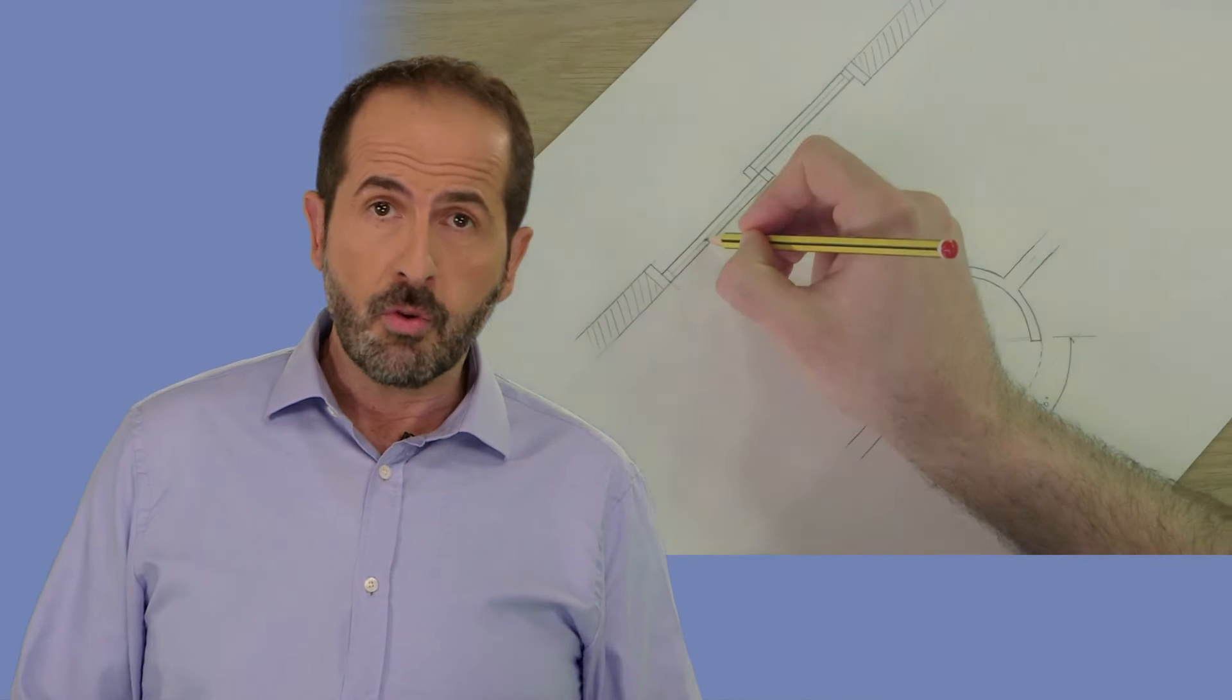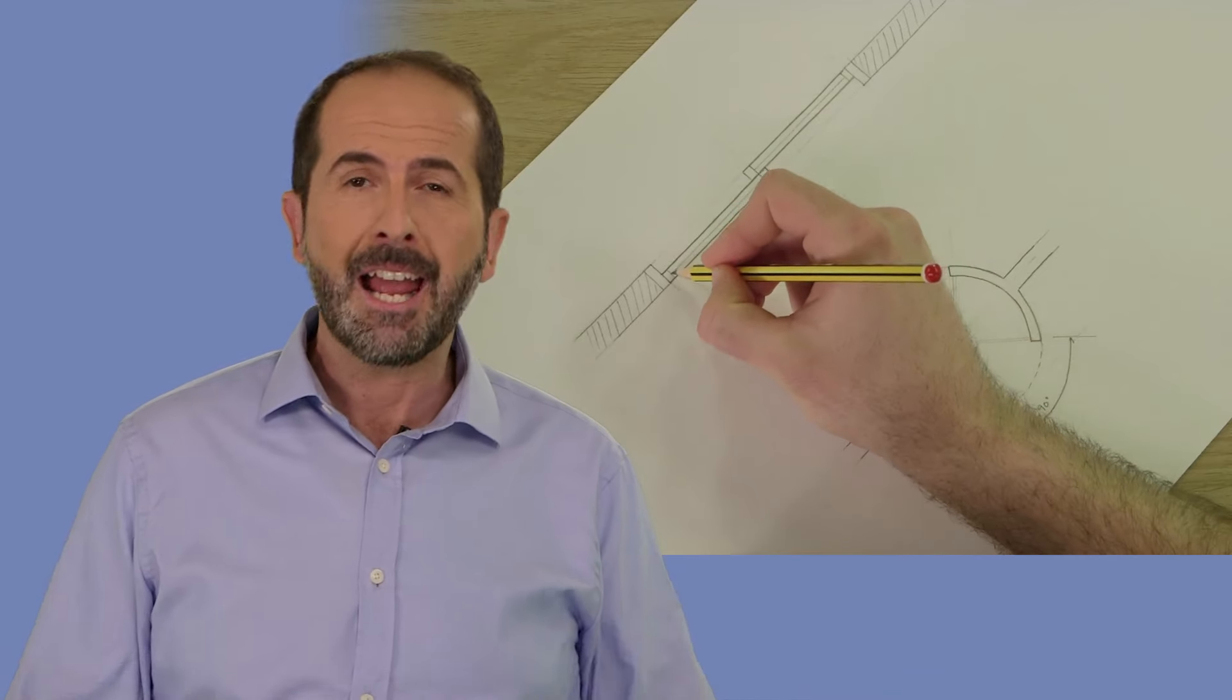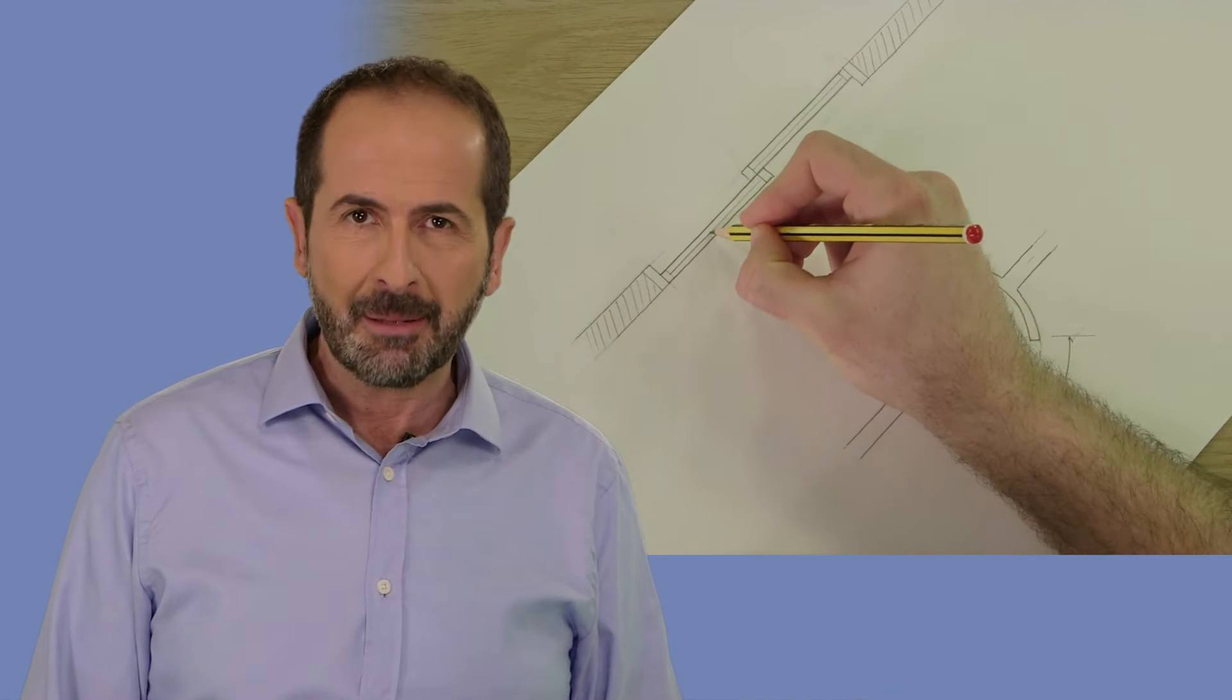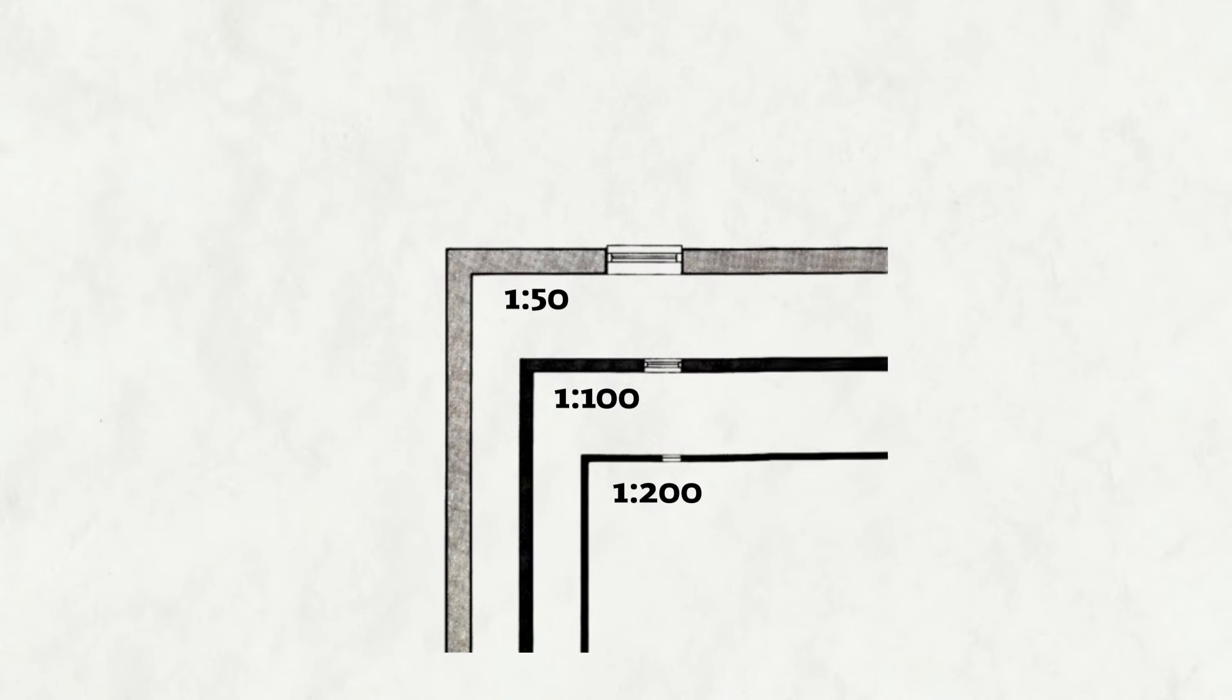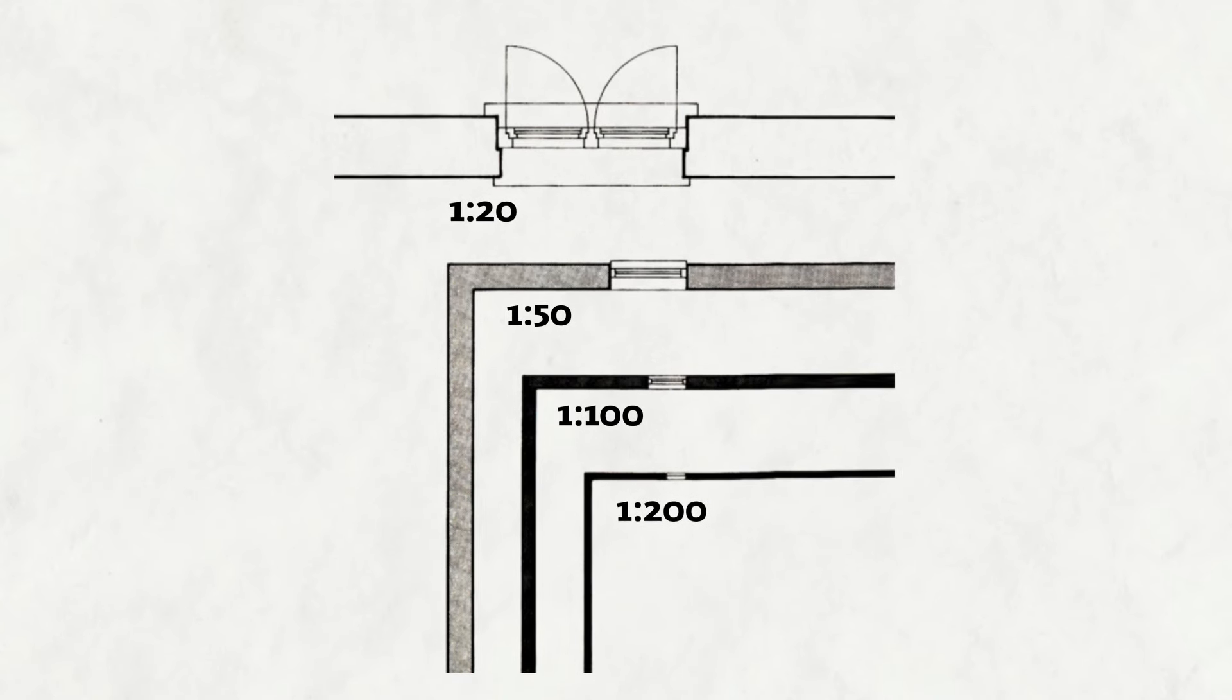Al dibujar en planta una ventana su representación variará en función de la escala a la que lo dibujemos, que podrá ir desde dos líneas que definan su cara interior y exterior en escalas de 1:200, por ejemplo, a un desarrollo completo en escalas de 1:20.